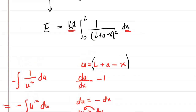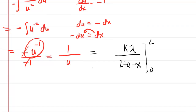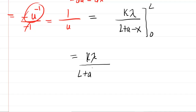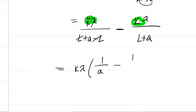Don't forget the K lambda constant we factored out. Plugging in the upper bound L for X gives K lambda over (L plus A minus L). Subtracting what we get from the lower bound zero gives K lambda over (L plus A). Since L minus L is zero, we can simplify and factor out K lambda, giving the final electric field equation: E equals K lambda times (1 over A minus 1 over (L plus A)).